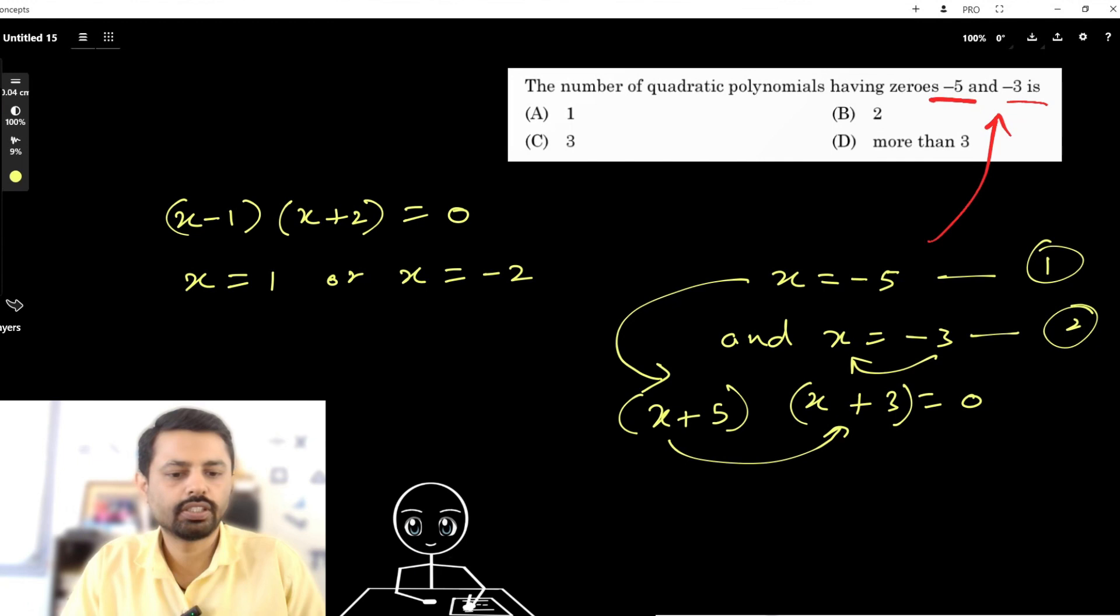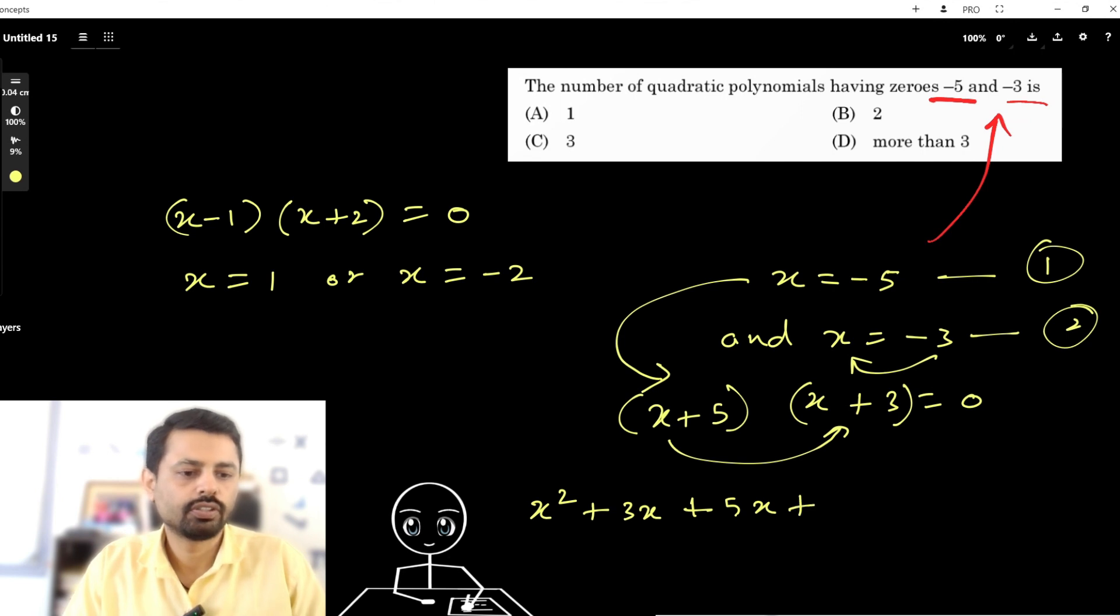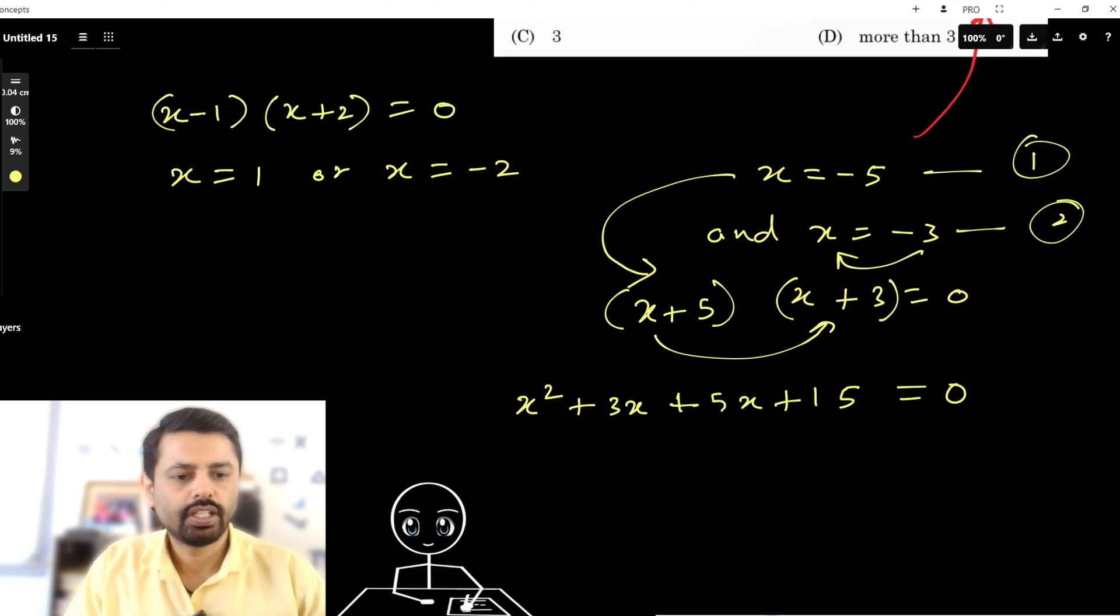So x into that bracket is x² + 3x. Now 5 into that bracket will give us +5x, and 5×3 is 15, plus 15. So that's our polynomial equal to 0.